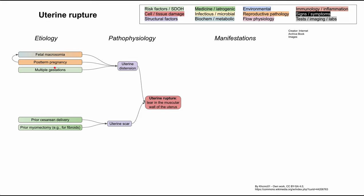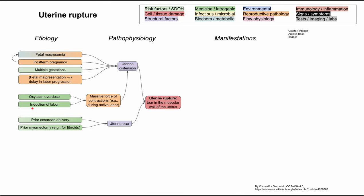Multiple gestations also increase pressure in the uterus — having twins or triplets as opposed to a single baby. Fetal malpresentation, where baby isn't head down in the normal position, can lead to a delay in labor progression, and that delay means increased uterine pressure as contractions continue. During labor itself, pressure can be much higher, worsened by induction of labor using oxytocin to increase the force of contractions, or in cases of oxytocin overdose — both medical and iatrogenic causes of increased uterine pressure.